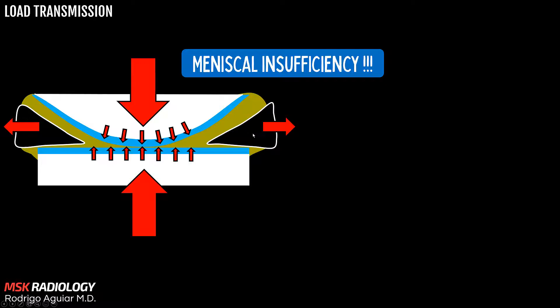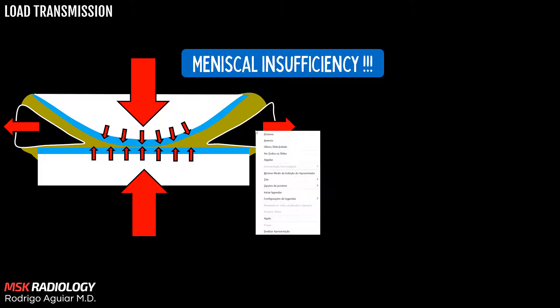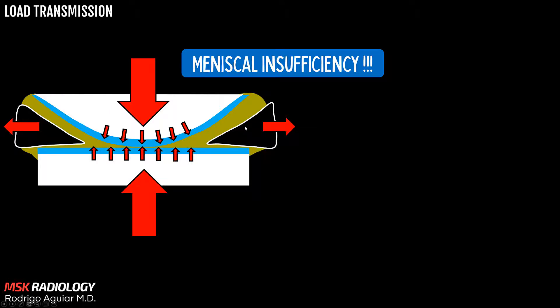That's why all meniscal tears that compromise the circumferential fibers are very detrimental to the knee. For example, radial tears, meniscal root ligament tears, and complex tears are among these types of dangerous tears that can cause a lot of trouble in the knee.